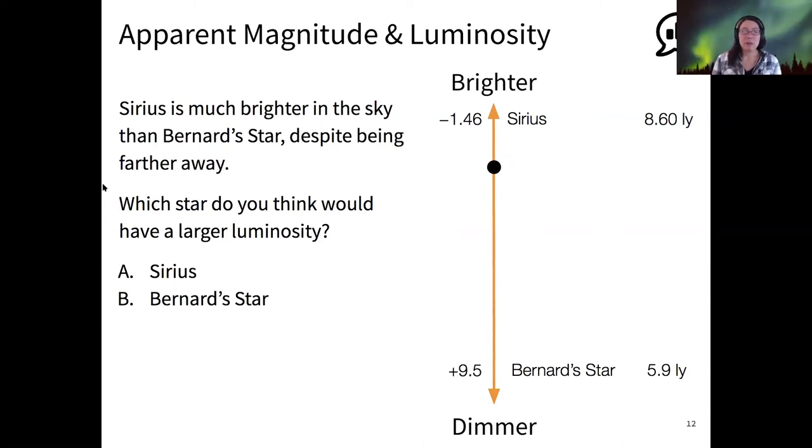If I have a very bright star that's very far away, it could look dimmer than a dim star that's nearby. So we'll practice with this idea in the activity today. And here's one example. So we have Sirius is much brighter than Bernard's star, even though it is farther away than Bernard's star. So which one do you suppose has the higher luminosity? Yeah. So if it's brighter, despite being farther away, then it must be actually putting out a lot more energy than Bernard's star. Definitely.